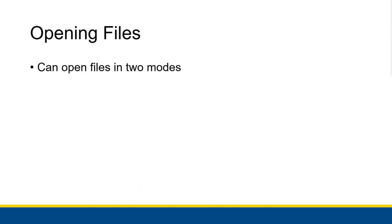To give your StreamWriter variable an object to hold, you have to open the file — tell Visual Basic to open up the text file you want to write to, then create a StreamWriter holding onto that file. There are two different modes you can open a file in, and the real difference is what happens if you try to open a file that already exists.